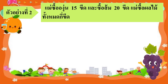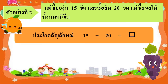จากการวิเคราะห์โจทย์ปัญหาเมื่อสักครู่นะคะ ทำให้เราทราบว่าโจทย์ปัญหาในข้อนี้ใช้วิธีการบวก เราจึงสามารถเขียนเป็นประโยคสัญลักษณ์ได้ดังนี้ ประโยคสัญลักษณ์ สิบห้า บวก ยี่สิบ เท่ากับเท่าไร